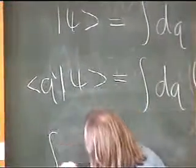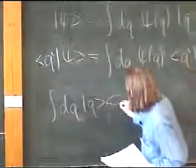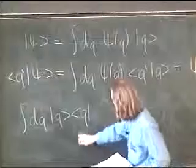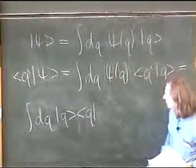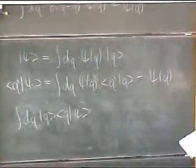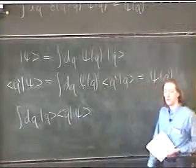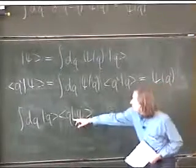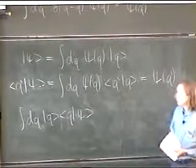Well, that's what I said the identity operator was. Acting on some arbitrary state, then we get this. But this thing here is just this inner product of Q and psi, and that's just the wave function evaluated at position Q.